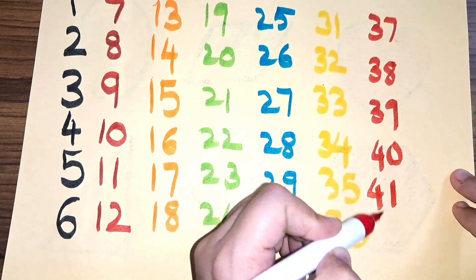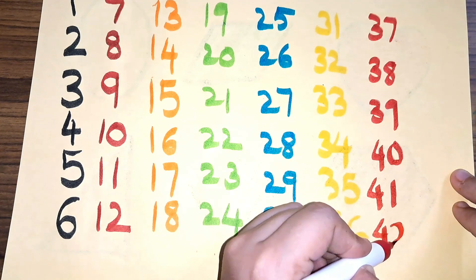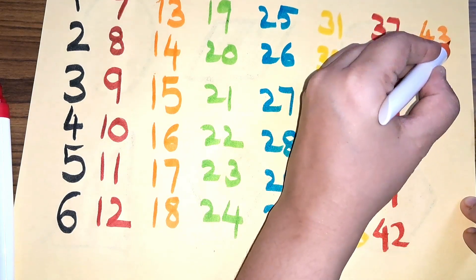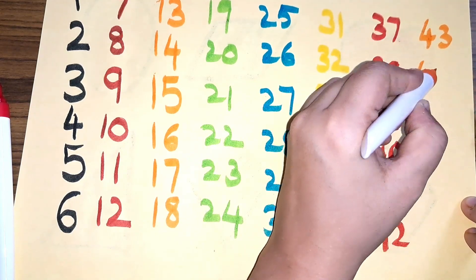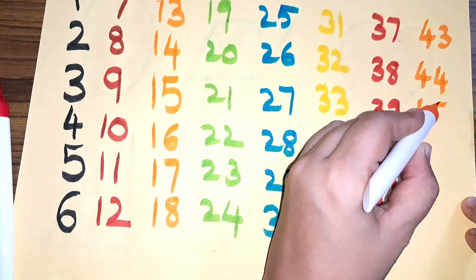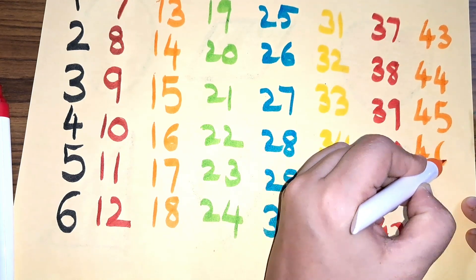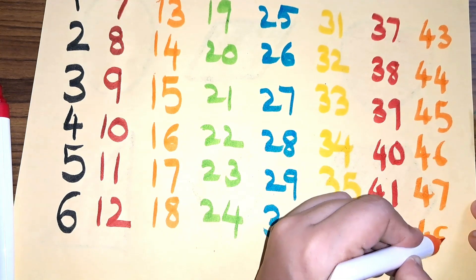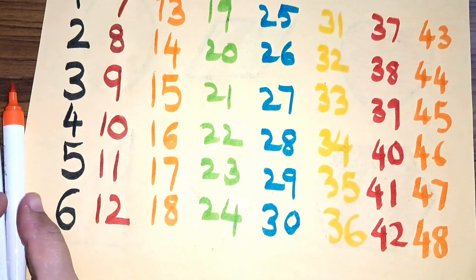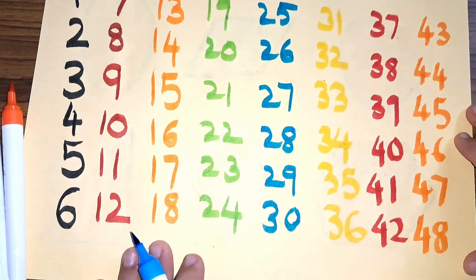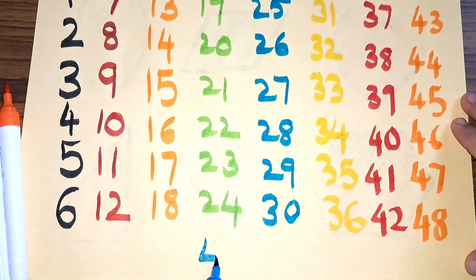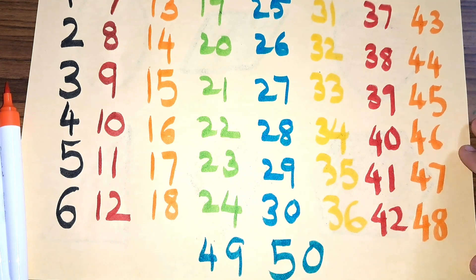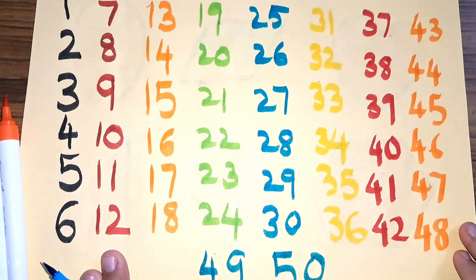Forty-one, forty-two, forty-three, forty-four, forty-five, forty-six, forty-seven, forty-eight, forty-nine, and fifty. Numbers 1 to 50.